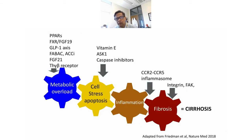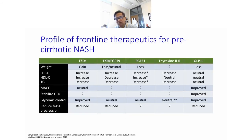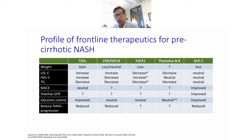Moving on to other more liver-related drugs, there is a lot of activity targeting the four phases of pathogenesis: metabolic overload, cell stress, inflammation, and fibrosis. Leading drugs include those targeting the FXR axis, the FGF21 axis, the thyroxine beta receptor, and the GLP-1s. If the goal is to improve all end organs, it is important to look at what these drugs also do to the lipid profile. Several of these actually increase LDL cholesterol, which must be taken into consideration. We don't have MACE data yet, so it is very important to evaluate not just liver benefits but also effects on the heart and kidneys.